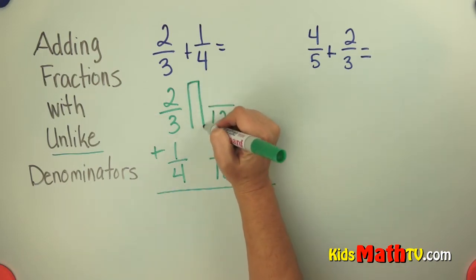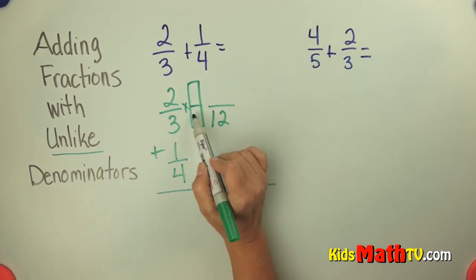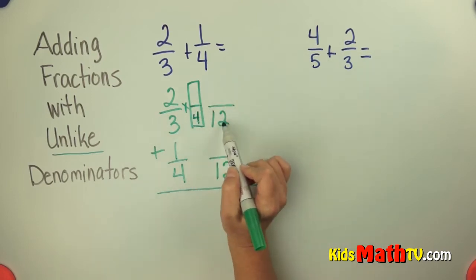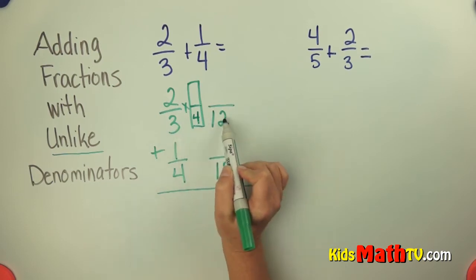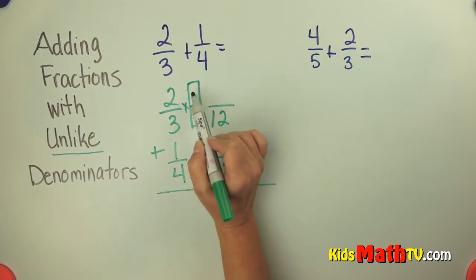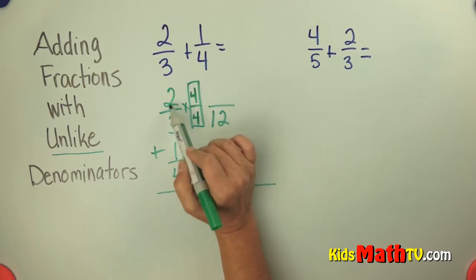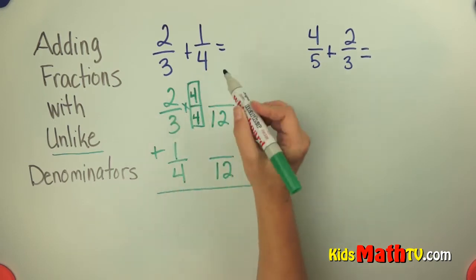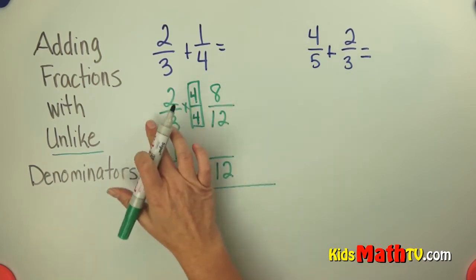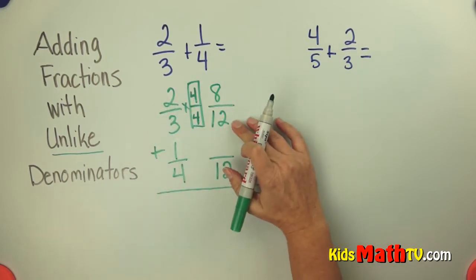So I'm going to multiply by 1. And I'm going to make that 1 be a number that will get 12ths. So 3 times 4 is 12. So in order for this to be 1, this also has to be 4. 4 over 4 is the 1. Multiplying by 1. So 2 times 4 is 8. So I can rename 2 thirds as 8 12ths.